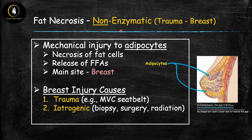Mechanism two is non-enzymatic fat necrosis, which is much more straightforward — it's caused by trauma. Mechanical injury to fatty tissue leads to necrosis of adipocytes and release of free fatty acids. The main site where this occurs is the breast, because the breast contains a lot of adipose tissue and is vulnerable to mechanical injury. The two main ways breast injury occurs are: trauma, such as from a seatbelt in a motor vehicle collision, and iatrogenic injury from medical interventions like breast biopsy, surgery, or radiation most commonly performed to evaluate or treat breast cancer.